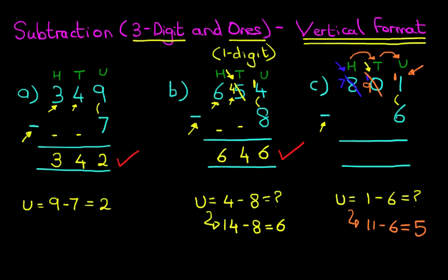So we write this down: 5. Next is the tens column — we've got 9, not 0 or 10 because we crossed those out. 9 minus 0 is 9. And the hundreds column: we've got 7 — we crossed out the 8 and made it a 7. 7 minus 0 is 7. Therefore, 801 minus 6 equals 795. Make sure you understand the principle of taking 1 from the digit to the left. That is the subtraction of a 3-digit number and a 1-digit number using the vertical format. Thank you.